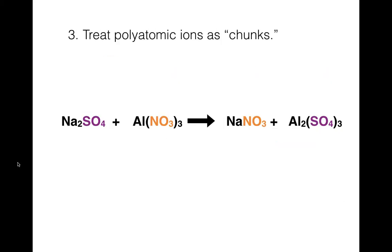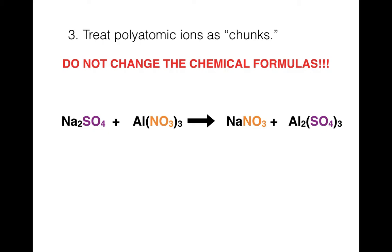These next slides are more like hints — you might not use them in all questions, but they will come up a lot. Number three says to treat polyatomic ions as chunks. This is one of the reasons we spent so much time going over polyatomic ions and memorizing them — it makes your life easier when you look at balanced chemical equations if you can recognize those polyatomic ions. As we go through and balance this one, again, do not change the chemical formulas — that's why I put the flames up there.